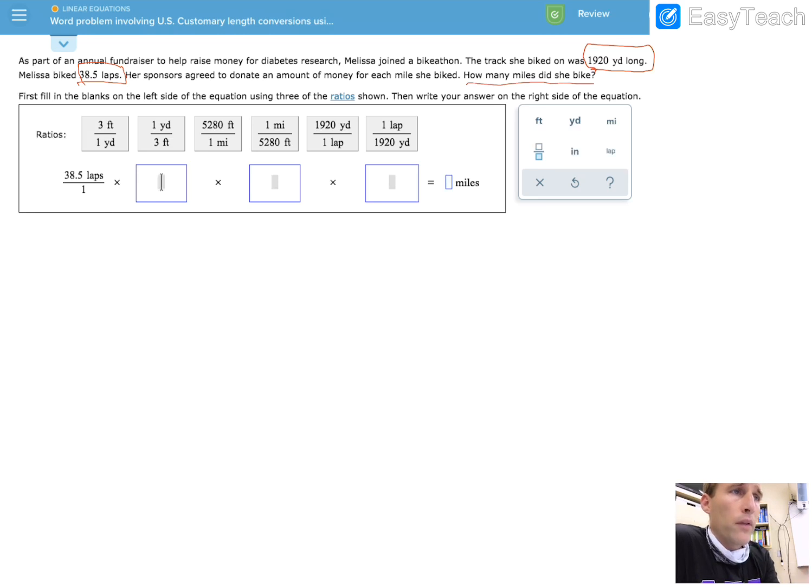The trouble is they give us yards and they tell us that the laps are that certain amount of yards. And they tell us how many total laps that she biked, but we need to turn those yards into miles. And this is the way dimensional analysis works.